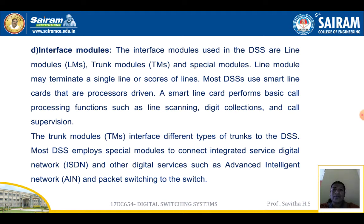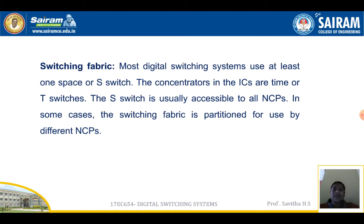Interface modules used in the DSS are line modules, trunk modules, and special modules. A line module may terminate a single line or scores of lines; most DSS use smart line cards that are processor-driven. A smart line card performs basic call processing functions such as line scanning, digital collection, and call supervision. Trunk modules interface different types of trunks to the DSS. Most DSS employ special modules to connect ISDN and other digital services such as Advanced Intelligent Network and packet switching to the switch. The switch fabric in most digital switching systems uses at least one space switch (S-switch). The S-switch is usually accessible to all NCPs; in some cases the switch fabric is partitioned for the use of different NCPs.